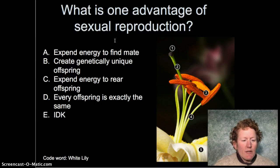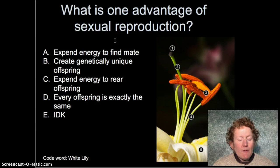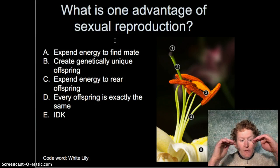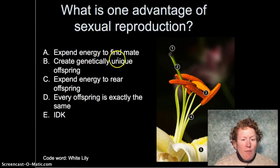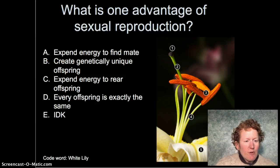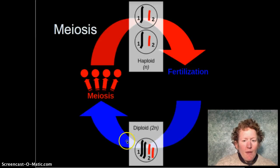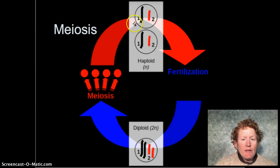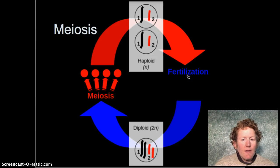Let's talk about sexual reproduction. The whole idea of meiosis and sexual reproduction is to combine two different sets of chromosomes. When you combine two different sets of chromosomes, you get genetically unique offspring. That's an advantage of sexual reproduction. Diploid cells undergo meiosis to get haploid cells, and then through fertilization you get diploid cells again.